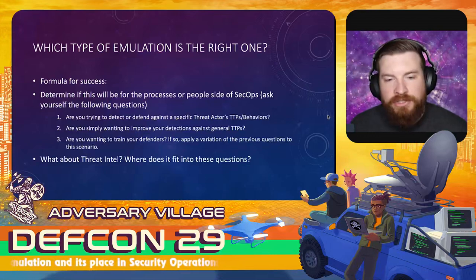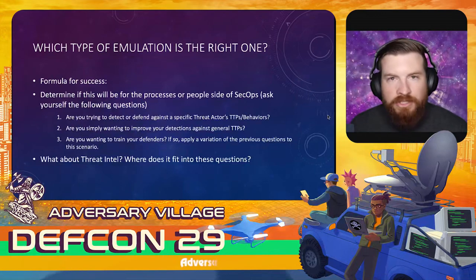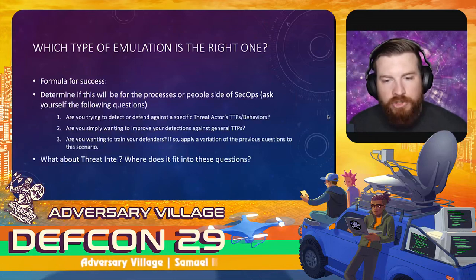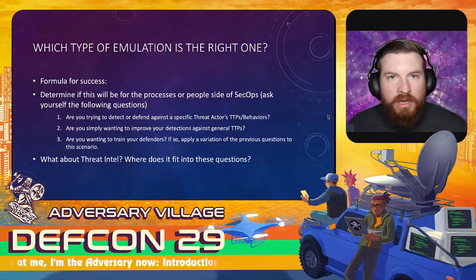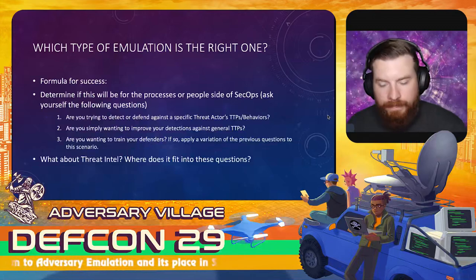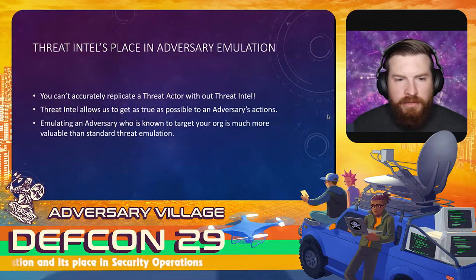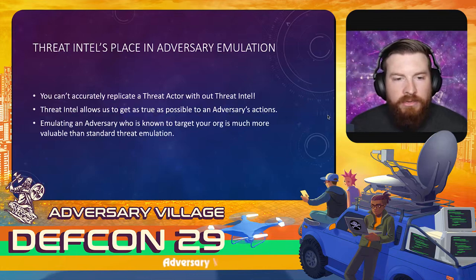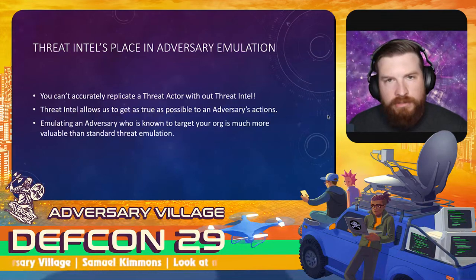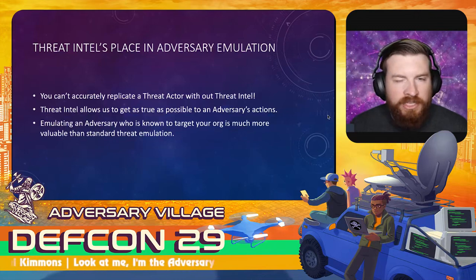You may be wondering about threat intelligence's role in these questions. Without threat intelligence, we don't have adversary emulation. Even for question two about detecting general TTPs, if we look at something like Red Canary's report on the top TTPs, we can see several threat actors are using those TTPs — and that's based on threat intelligence collected from the field. You can't accurately replicate a threat actor without threat intelligence. It allows us to get as true as possible to an adversary's actions, and remember — you may not reach 100%, and that's okay.